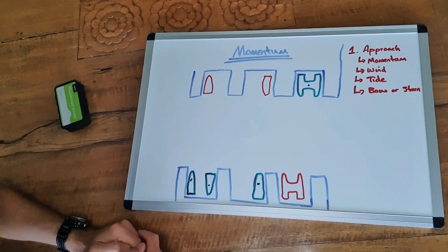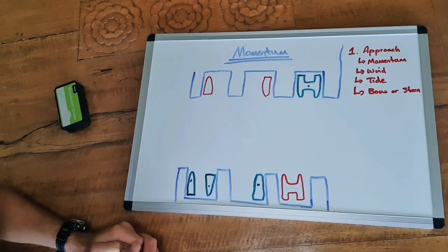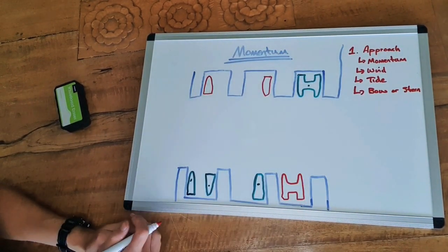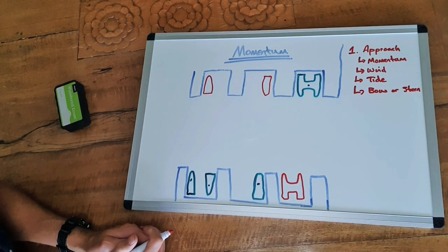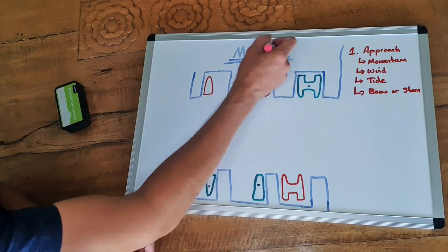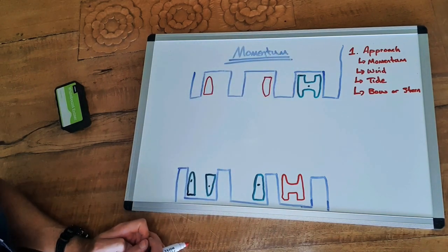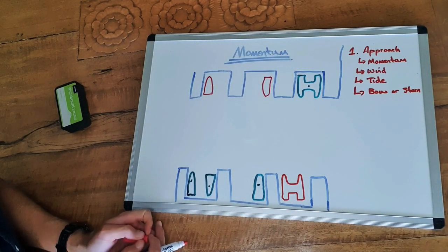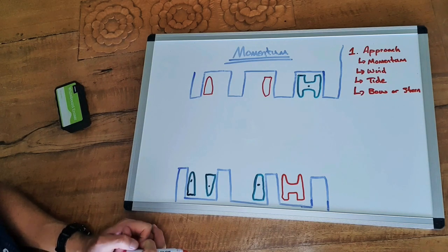Okay, so here we are. This is a layout of a berth, a set of docks, a set of berths anywhere in the world. And we are looking firstly at momentum and there's a couple of key points I want to make as we talk about momentum.